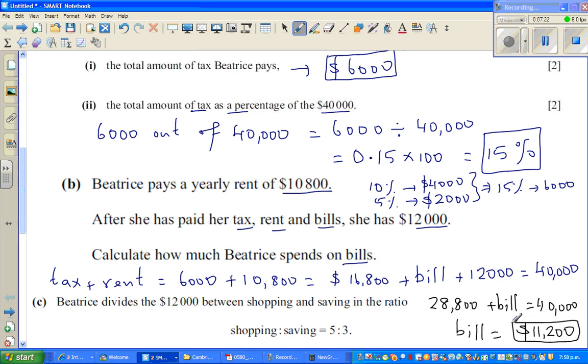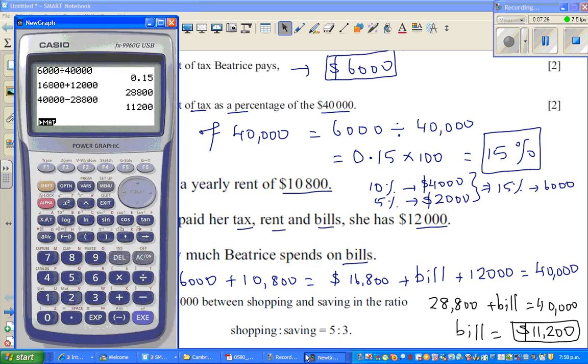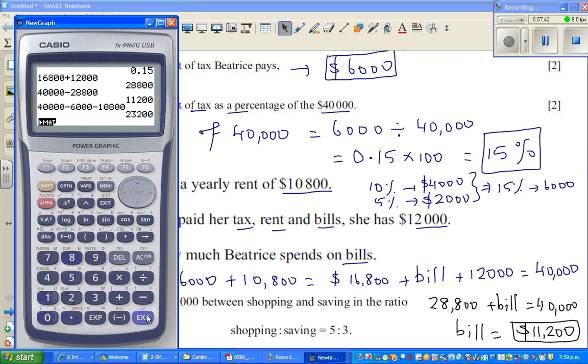Or you can also confirm. Let's check this in a different way. So $40,000, you take away the tax which was $6,000, then you take away the rent which was $10,800.